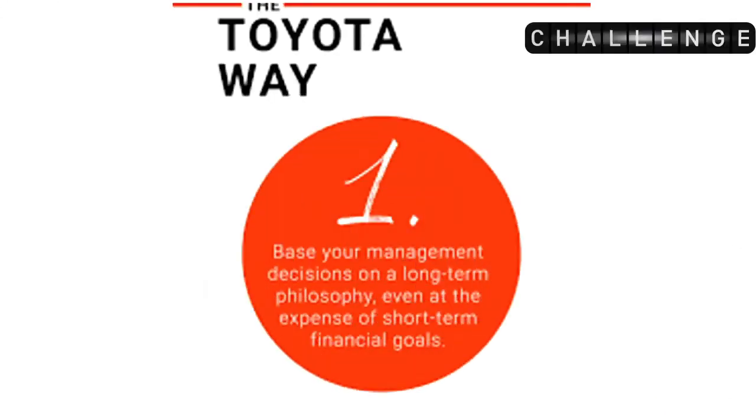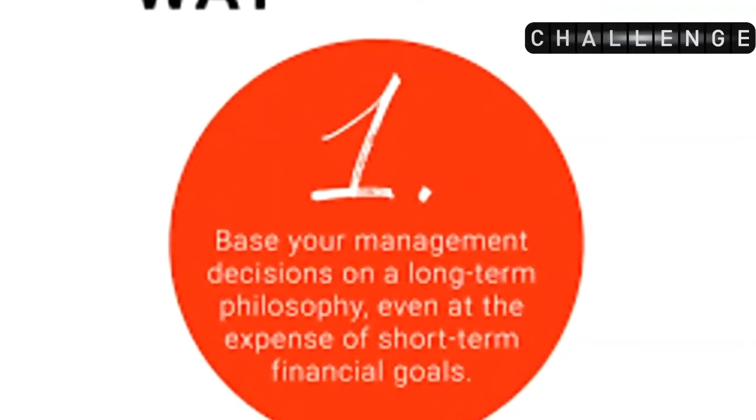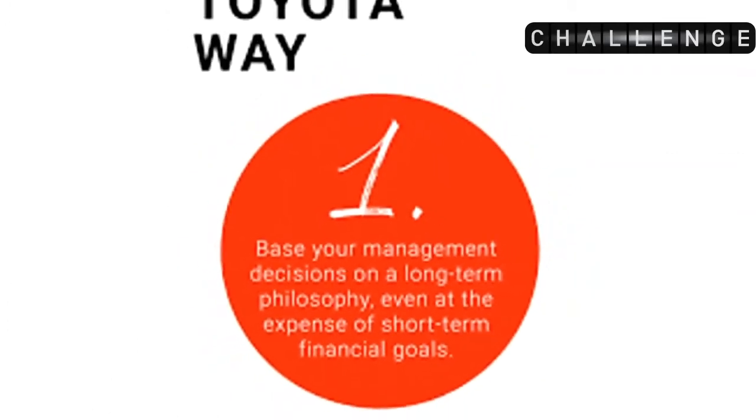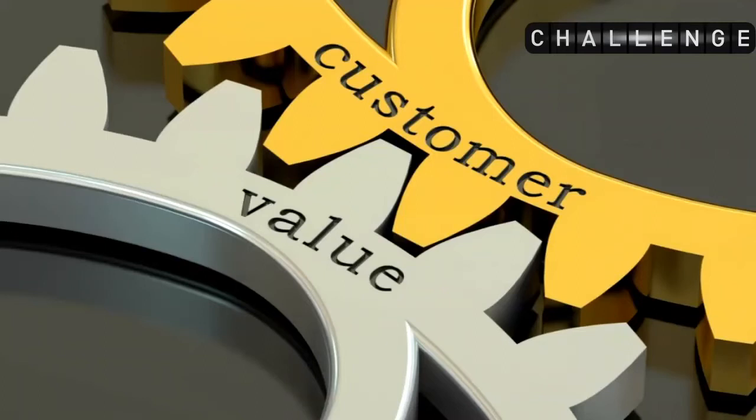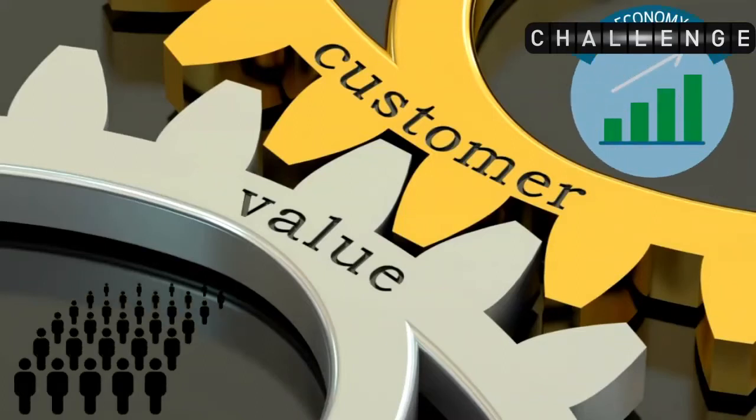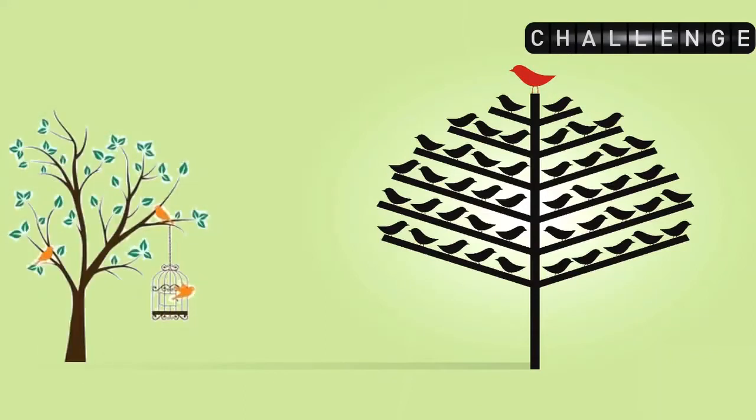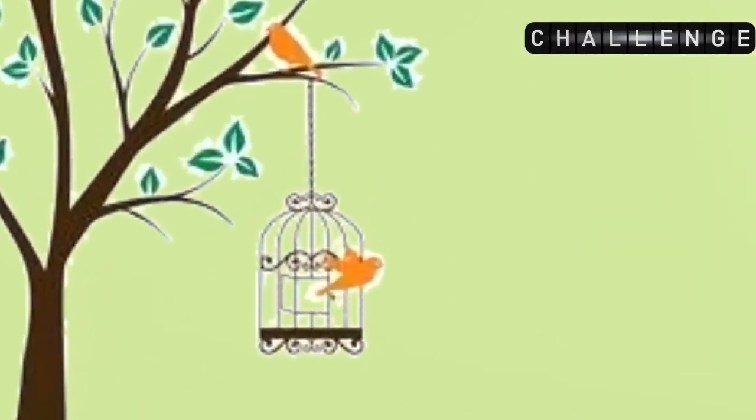Principle 1: Long-term philosophy. Base your management decisions on a long-term philosophy, even at the expense of short-term goals. Toyota always prioritizes generating value for customers, society, and the economy. The larger purpose is more important. Toyota wants its leaders to take responsibility. How are other companies different? Most companies keep looking for short-term results and very often sacrifice longer-term goals for short-term results.